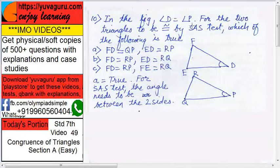Then you have to see SAS test. So two sides and one angle should be between them. That's the only logic you have to follow. Remaining here, all notions, free notions, you have to forget it. FD equals to QP.